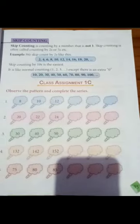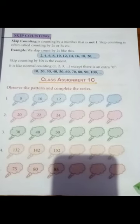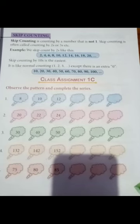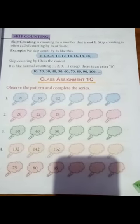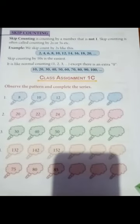Skip counting by 10 is the easiest. It is like normal counting 1, 2, 3, except there is an extra 0. For skip counting, you are given two terms, maximum three terms, and you need to complete the series. Example: 2, 4, 6.